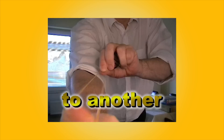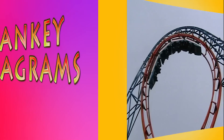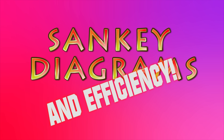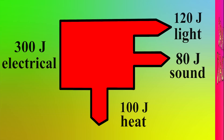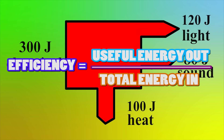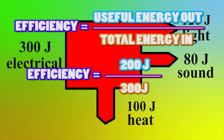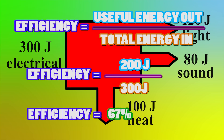Energy cannot be created or destroyed. It can only be changed from one form to another. Sankey diagrams can be used to work out the efficiency of a device — simply get the useful energy out and divide it by the total energy in, then multiply by a hundred to turn it into a percentage.